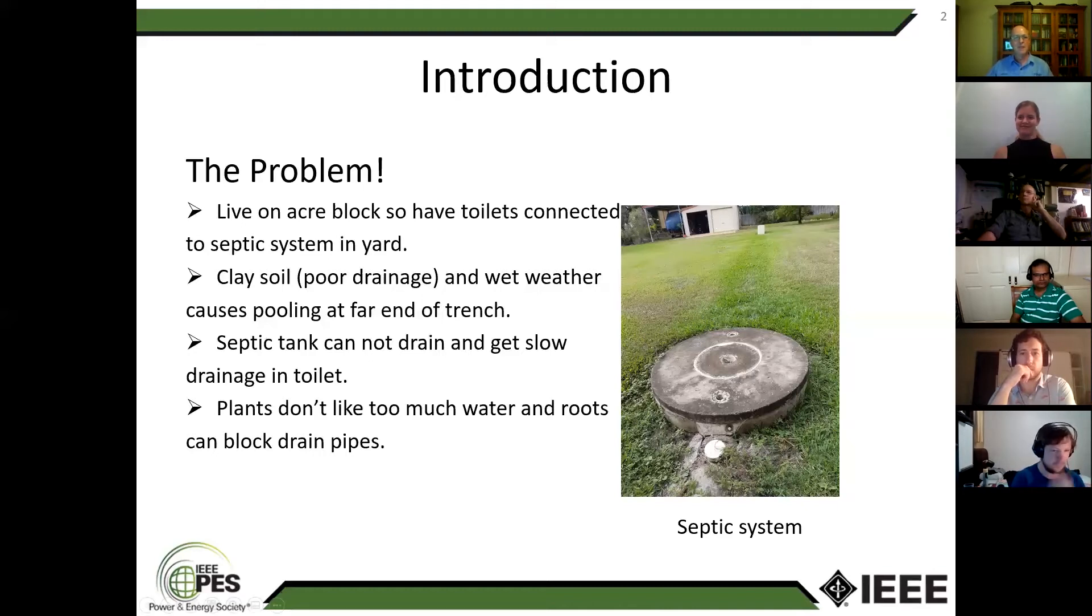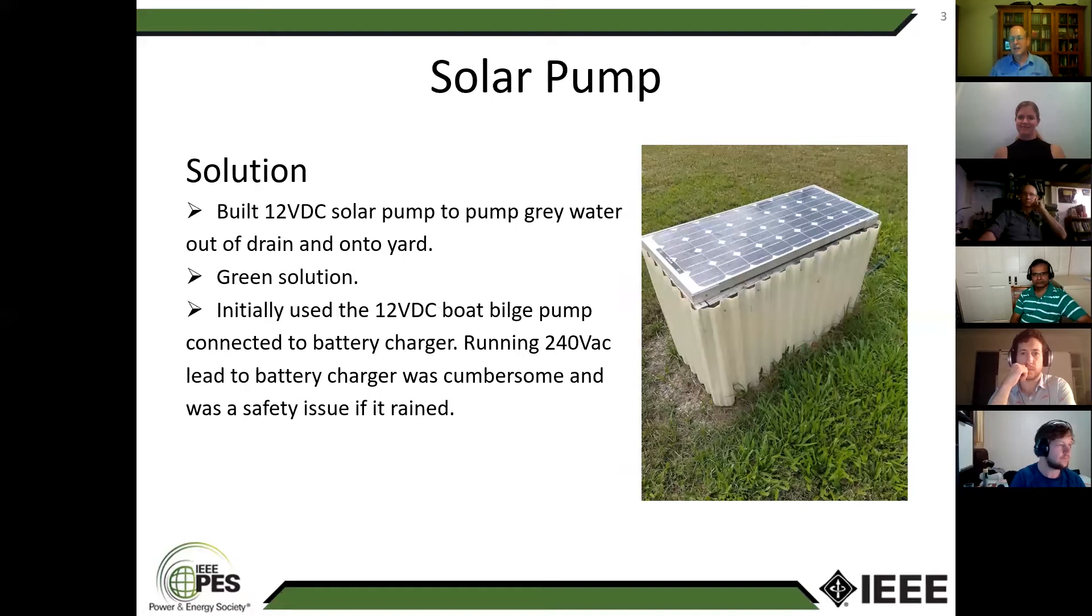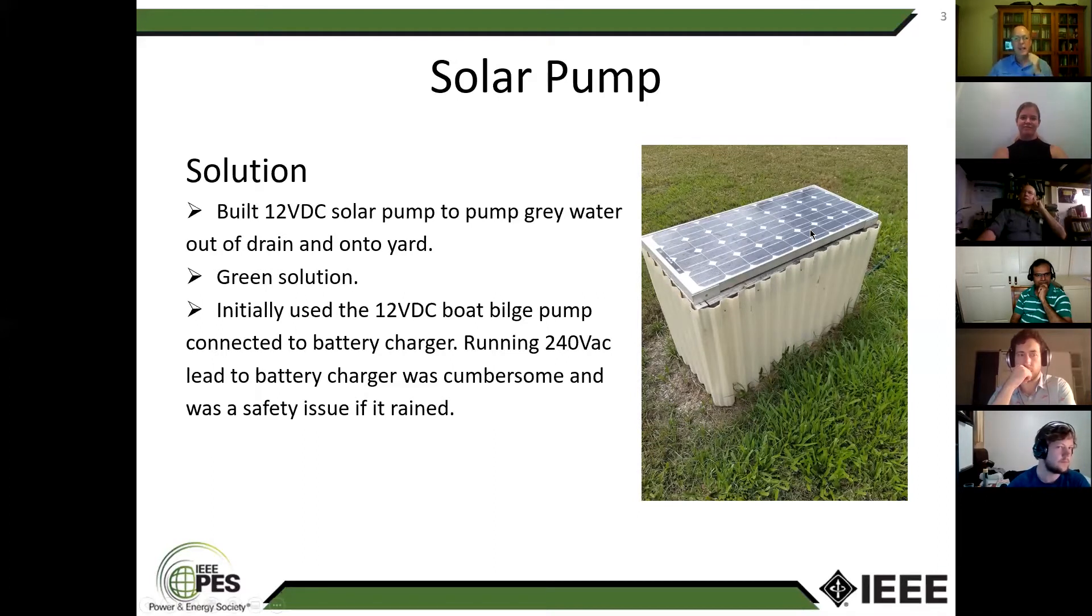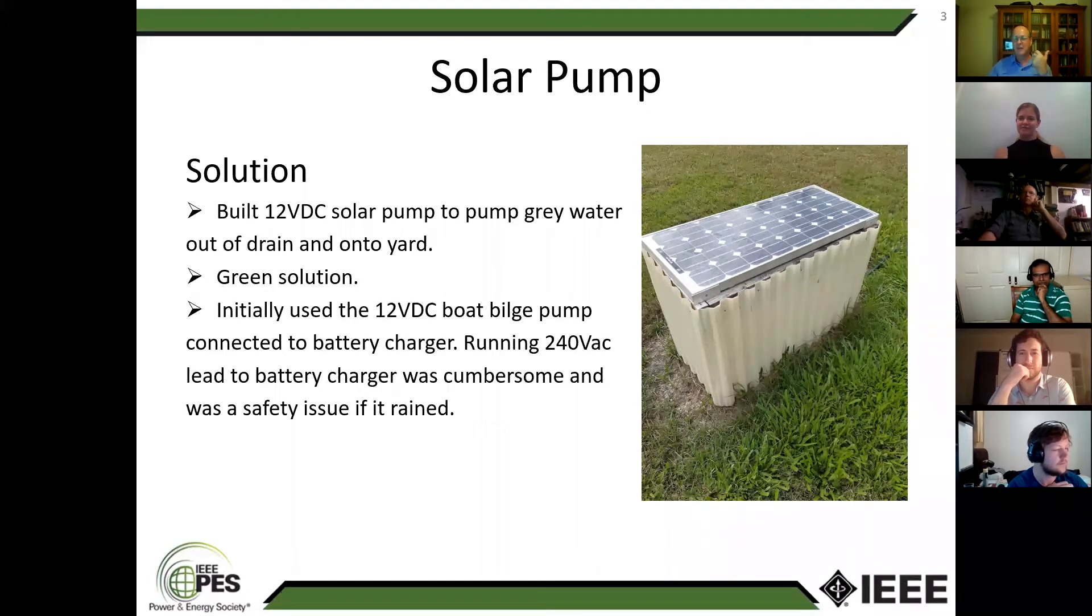In the end what I went to was a 12 volt pump. Initially I just used a 12 volt boat pump and I slid it into the pipe at the end of this absorption trench. Initially I was just running that off a battery charger when I needed to, but that wasn't very convenient. I was continually plugging this thing in and unplugging it, and when I really needed it, when it was raining, there was a safety issue with having this 240 volt battery charger sitting out in the rain.